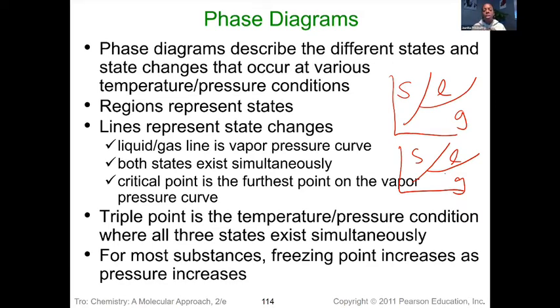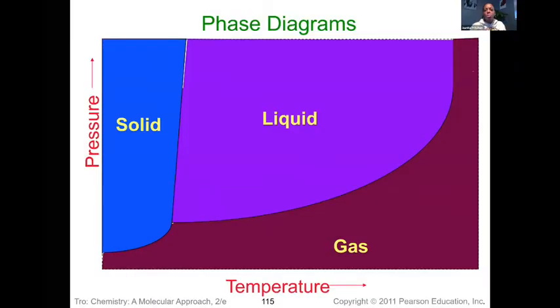In the center there's also what's called the triple point, which tells us the temperature and pressure condition in which all physical states can exist. And then there's also the critical point, which is above that point you're going to have those supercritical fluids that can exist.